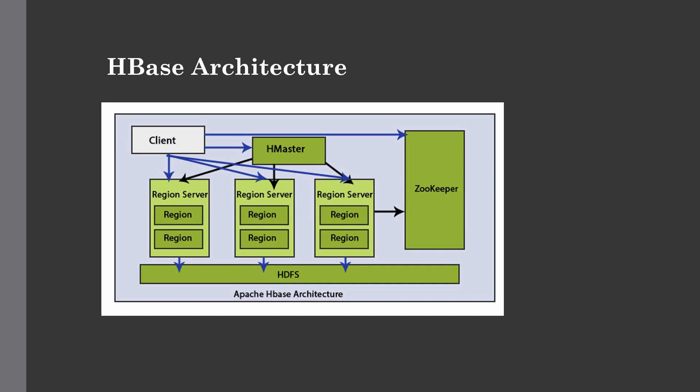Regions are nothing but tables that are split up and spread across region servers — similar to sharding. Region servers host these regions and communicate with the client to handle data-related operations. Whatever task is assigned by the client goes to the HMaster, which negotiates with region servers. Region servers handle all read and write operations for all regions under them and also decide the size of each region.